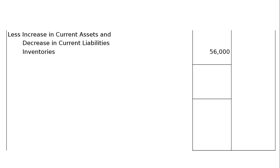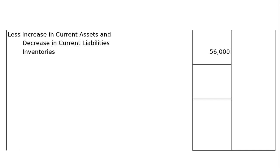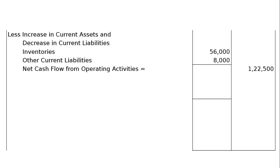First deduction: inventories (stock) increased from ₹1,50,000 to ₹2,06,000 — an increase of ₹56,000 — so this is less, because we purchased stock, meaning operating outflow. Second deduction: other current liabilities decreased from ₹20,000 to ₹12,000 — a decrease of ₹8,000 — meaning we paid off dues, another operating outflow. Deducting ₹64,000 total gives us the net cash flow from operating activities (Part A).